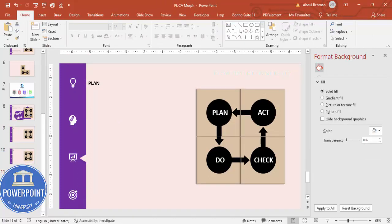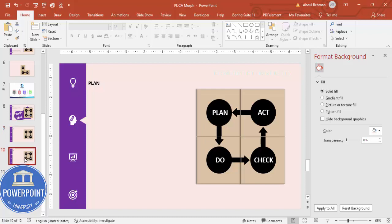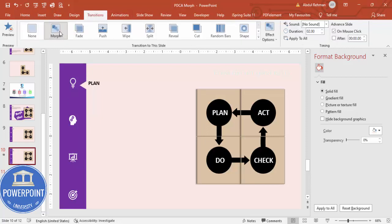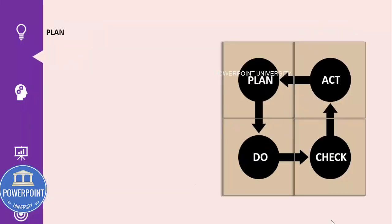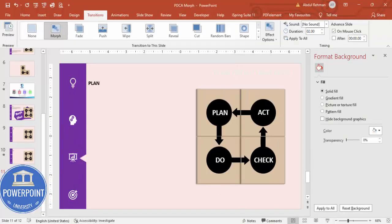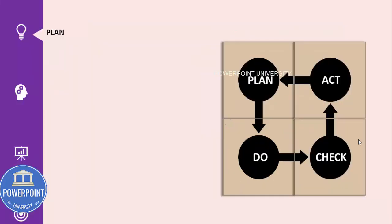After the merge and subtract, you can see Plan, Do, Check, and Act shapes are ready. Select slides 2, 3, and 4 — that's slides 10, 11, and 12 in this project. Go to the Transition tab and select the Morph transition. Play it to see how it works. To make it faster, reduce the duration to 1 second.